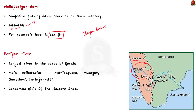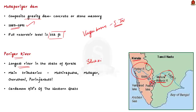Its full reservoir level is 152 feet and it was constructed to provide water through a tunnel to Vaigai Basin in Tamil Nadu for irrigation benefits. Even though the dam is located in the state of Kerala, the purpose of the dam is to divert water from the Periyar River to the southern part of Tamil Nadu to aid farmers in cultivation of crops. The dam was built on the Periyar River in the Idukki district of Kerala. It is the longest river in the state of Kerala and is considered as a lifeline there. The dam is located on the Cardamom Hills of the Western Ghats.